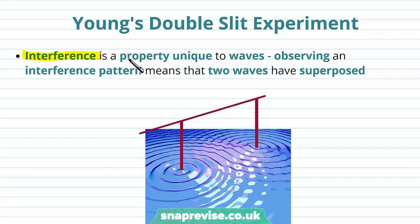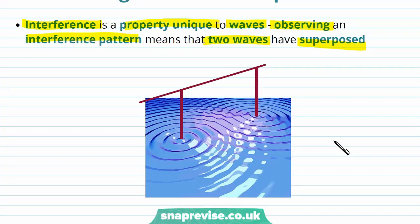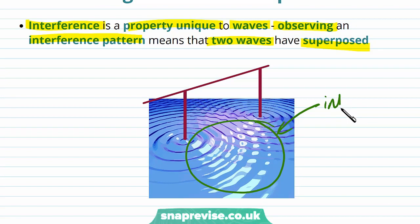Interference is a property unique to waves. Observing an interference pattern means that two waves have superposed. For example, we've come across previously that two dippers vibrating at the same frequency can produce two coherent water waves, which then results in a stable interference pattern produced by the two water waves when they superpose.